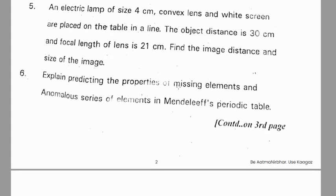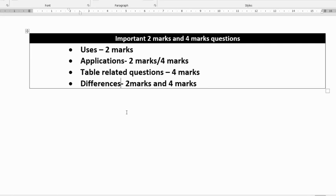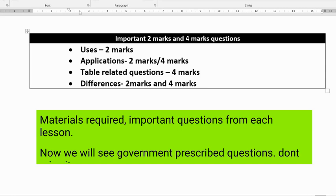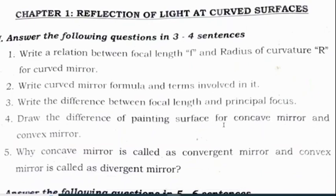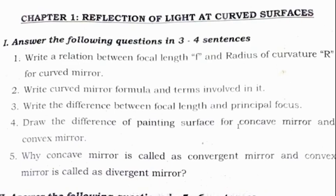Explain the predicting of properties of missing elements and analogous series of elements in Mendeleev's periodic table. Based on these pre-final and practice paper questions, we concluded that uses, applications, table-related questions, and differences are the most important two marks and four marks question types. These are Physical Science important questions — not only questions but also objective type with numericals. These are the questions prescribed by the Government of Telangana, DCEB. Go through all the chapters thoroughly and prepare well for the SSC board exams.